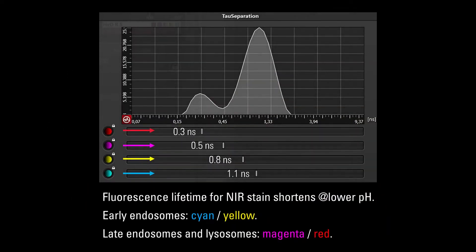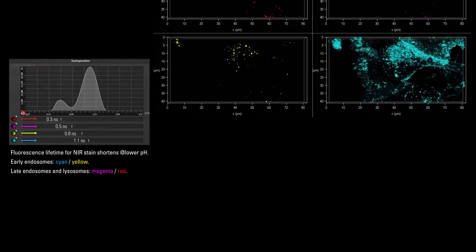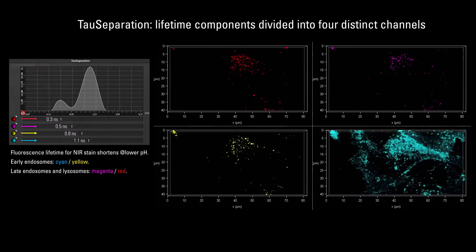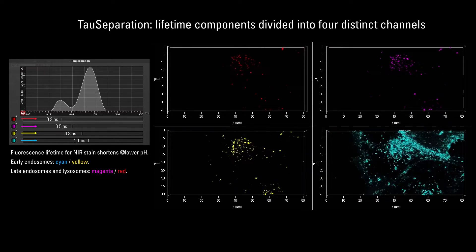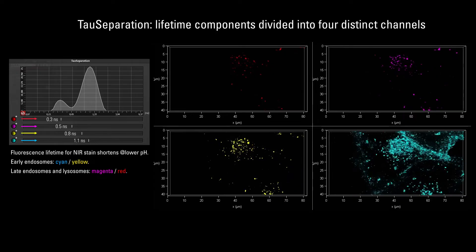Using a second special tool called tau separation, we can interpret the lifetime-derived information in more detail. And we can generate different channels according to the different response that the probe senses from the different pH. This can then be translated into the different maturation steps.